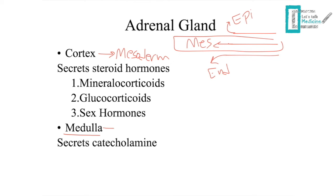The medulla has a very distinct embryological origin — it originates from neural crest cells. Those neural crest cells develop into the chromaffin cells, which are very distinctive of the medulla as they have a direct innervation with the sympathetic system. So when you're in the fight-or-flight response, the sympathetic system gets activated, innervating the medulla, stimulating secretion of both epinephrine and norepinephrine — which is why we have a lot of epinephrine and norepinephrine circulating in the blood in situations of stress or fear.